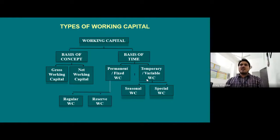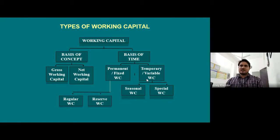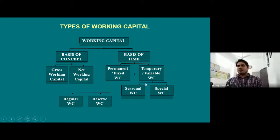Working capital is mainly of two types based on concept and time. On the basis of concept: gross working capital and net working capital. On the basis of time: permanent/fixed and temporary working capital. Permanent working capital is further categorized into regular and reserved. Temporary working capital is divided into seasonal and special. This entire structure shows the types and distribution of working capital. Students can take screenshots for their studies.